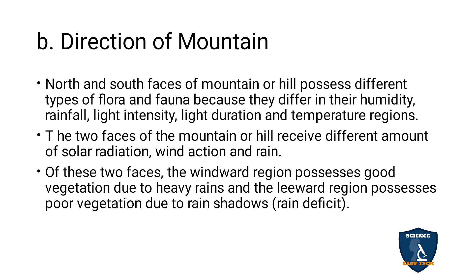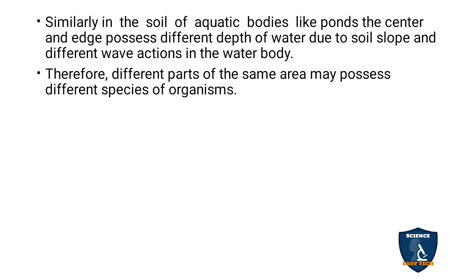Based on humidity, rainfall, light intensity, light duration, and temperature, the two faces of a mountain or hill receive different amounts of solar radiation, wind, and rain. Of these two faces, the windward region receives more rainfall — it is the heavy rain area. The leeward side has a rain deficit and is also called a rain shadow.